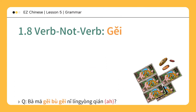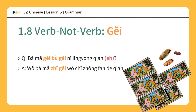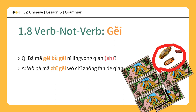给不给。 爸妈给不给你零用钱？ Do your parents give you an allowance? 我爸妈只给我吃中饭的钱。 My parents only give me lunch money. 爸妈给不给你零用钱啊？ The modal particle 啊 makes the tone more familiar and friendly.